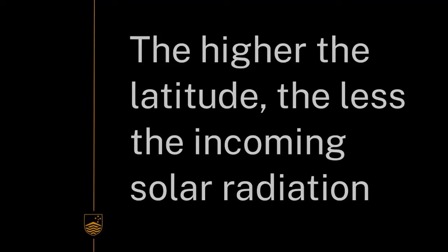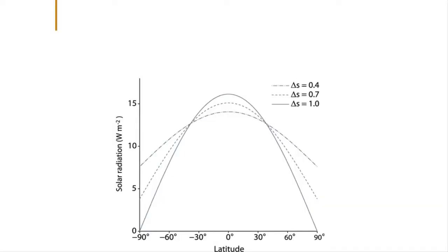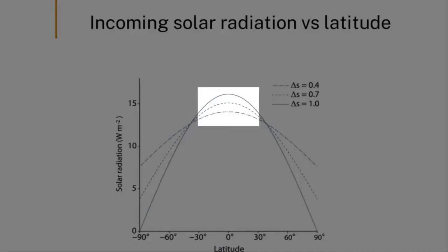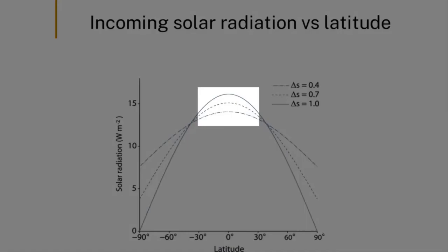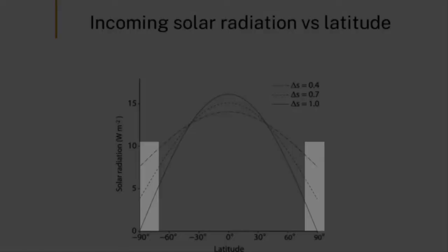If you were to look at the latitudinal distribution of the incoming solar radiation at the top of the atmosphere, you'd find that it has a peak at the equator and it drops off to minima at the poles.